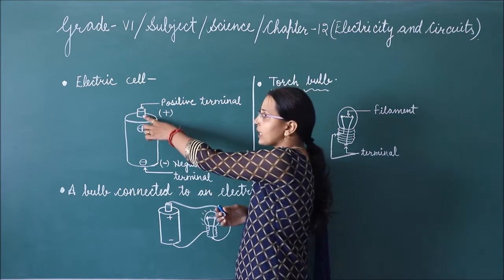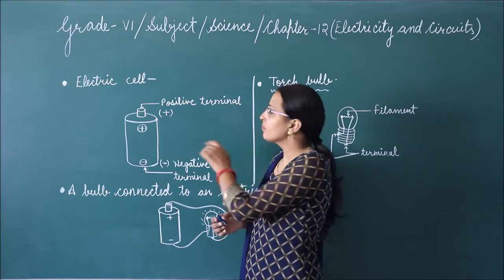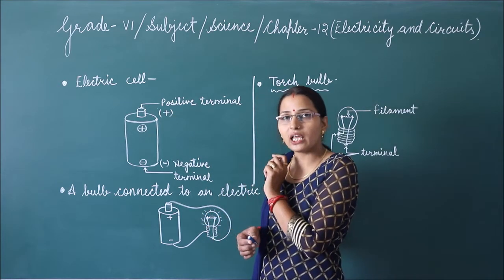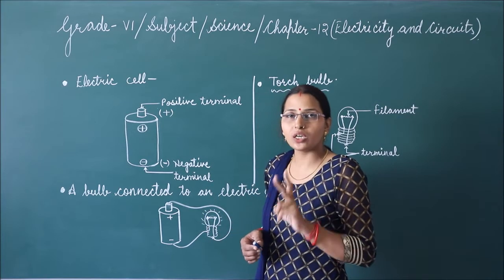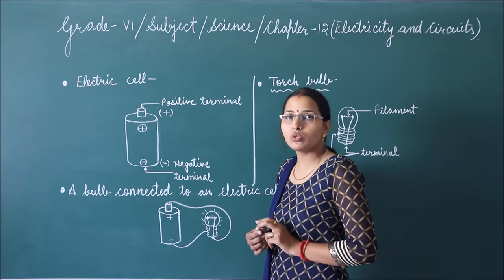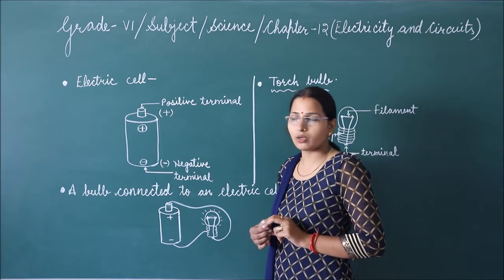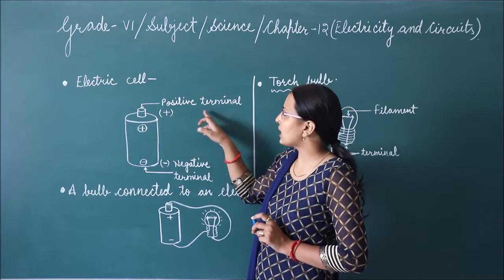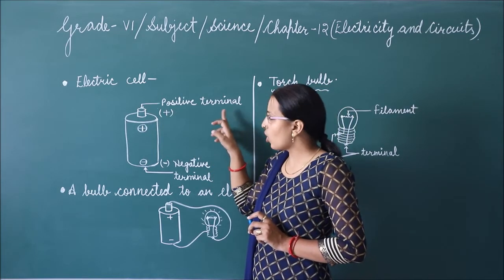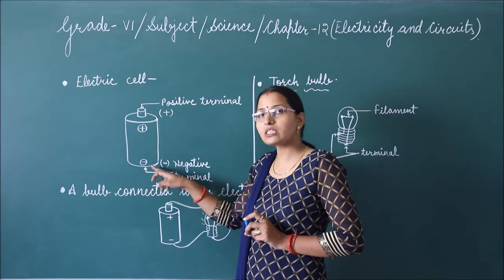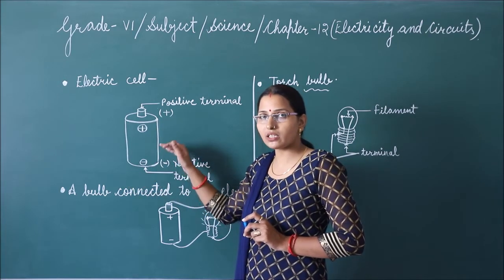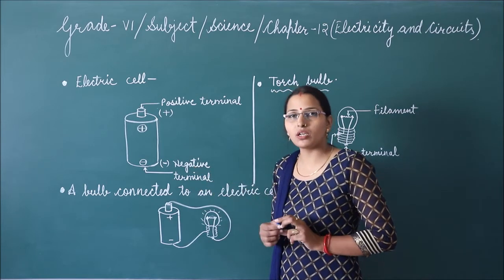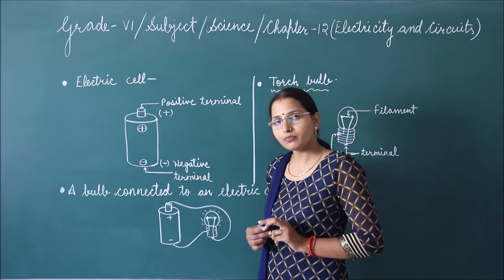There is a metal disc at the base of the electric cell. The cap side of the cell is the positive terminal, because this cell has two terminals. The cap-side terminal is called the positive terminal, and the metal disc at the base of the electric cell is the negative terminal of the cell.